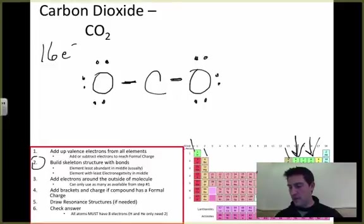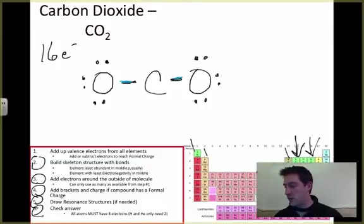Right here, I built my skeleton structure, I used up all my electrons. I do not have a formal charge, so I don't need to do that. Resonance structures, not sure about that one yet. Go ahead and check my answer. All of them should have eight electrons around the outside edge. This oxygen has two, three, four, five, six, seven, eight. This oxygen has two, three, four, five, six, seven, eight. This carbon has two, four.